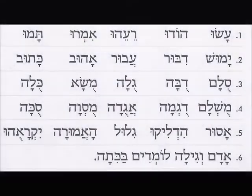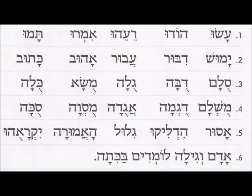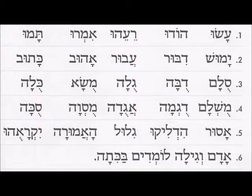Let's practice some reading. Please pause this video and then check with me to see if you're reading correctly. Line number one — the words are on screen. Line two. Now let's practice the kubutz on line number three: sulam, duba, gula, musa, kula. And line number four.